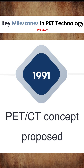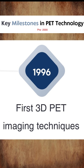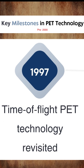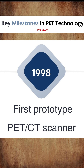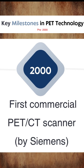In 1991, the PET/CT concept was proposed and the first 3D PET imaging technique was introduced in 1996. In 1997, the concept of time-of-flight was revisited — it had originated in the 1970s but was revisited in 1997. In 1998, the first prototype PET/CT scanner came, and in 2000 the first commercial PET/CT scanner arrived.